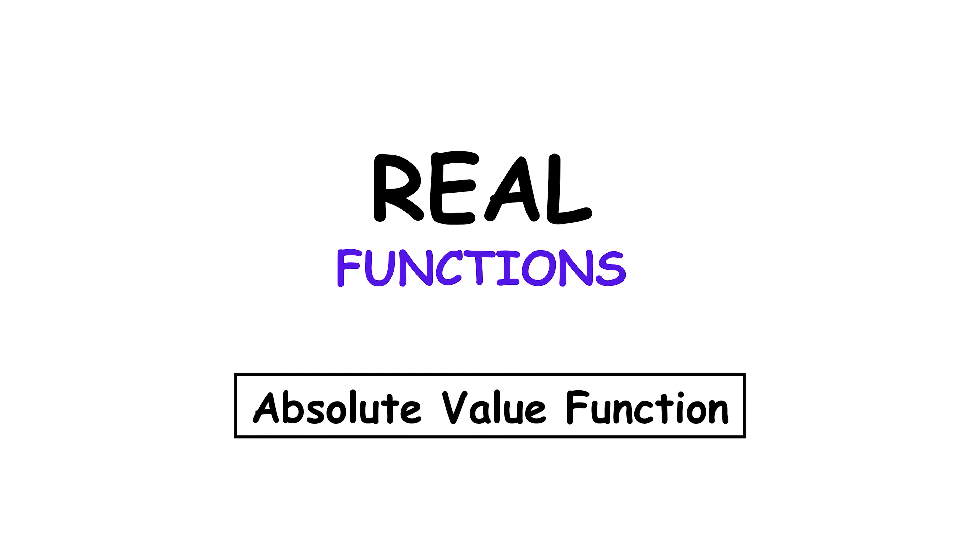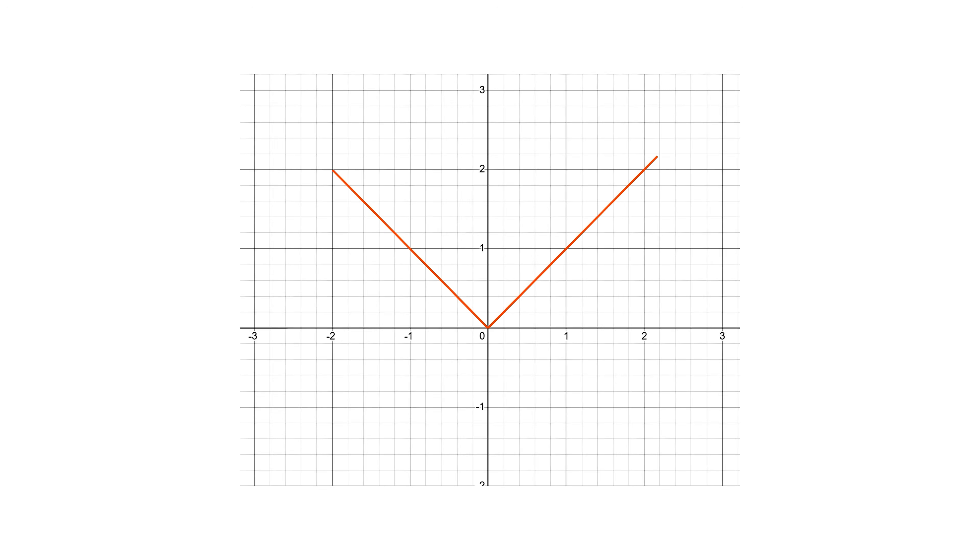Absolute value function. The absolute value function is represented as f of x equals the absolute value of x. It is defined piecewise. If x is greater than or equal to 0, then f of x is equal to x. If x is less than 0, then f of x is equal to negative x. This structure creates a v-shaped graph, with its vertex at the origin.